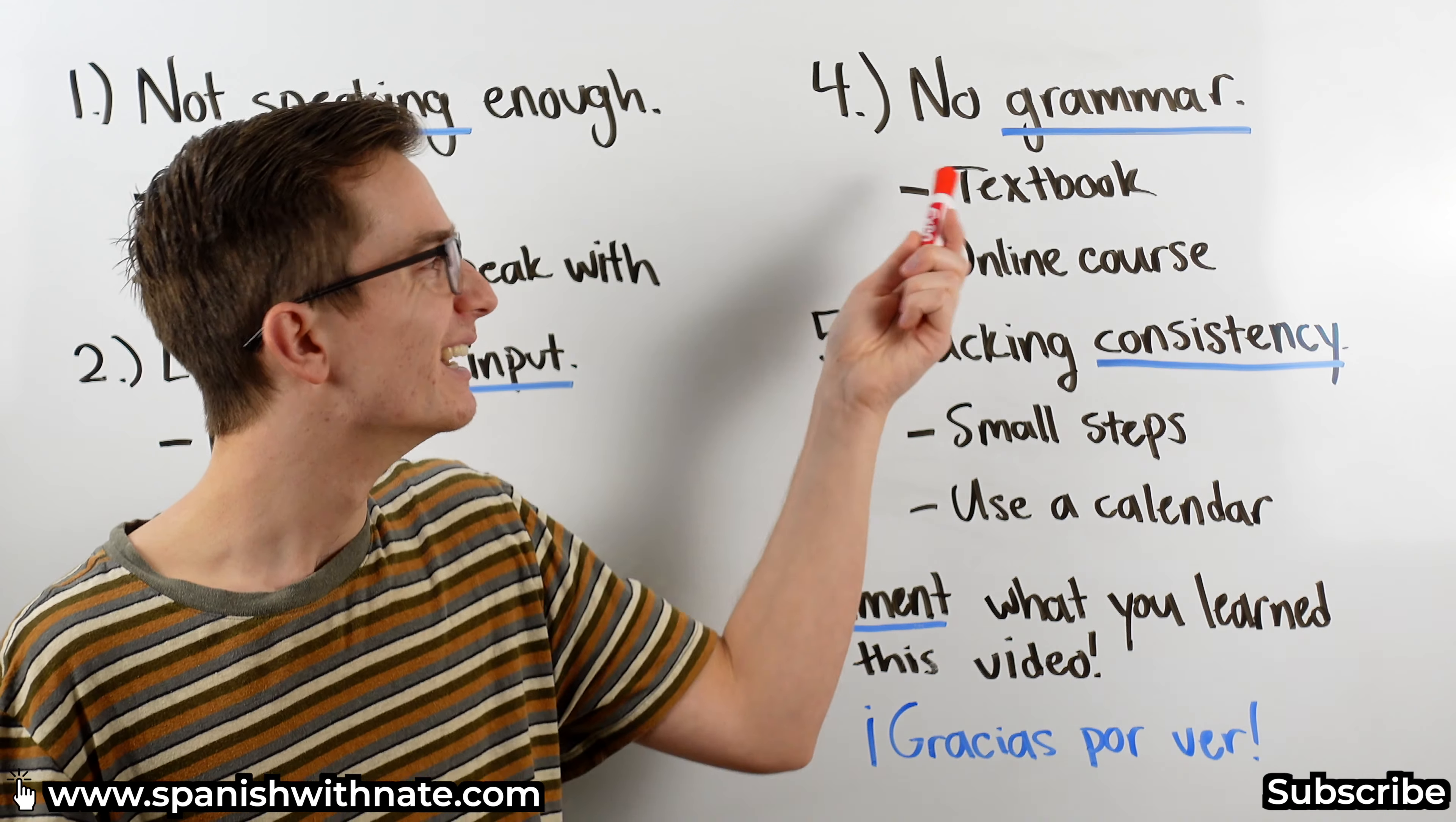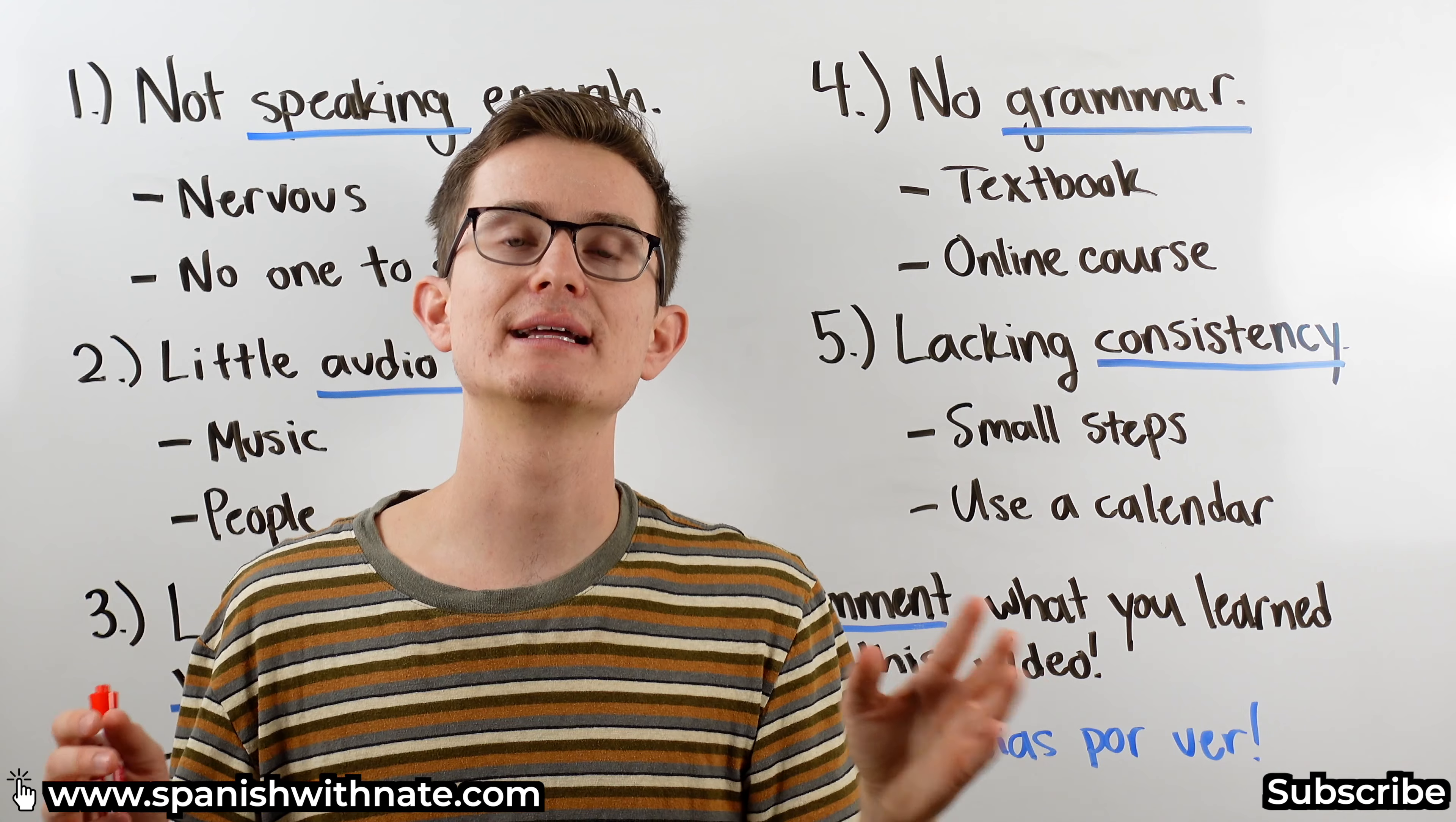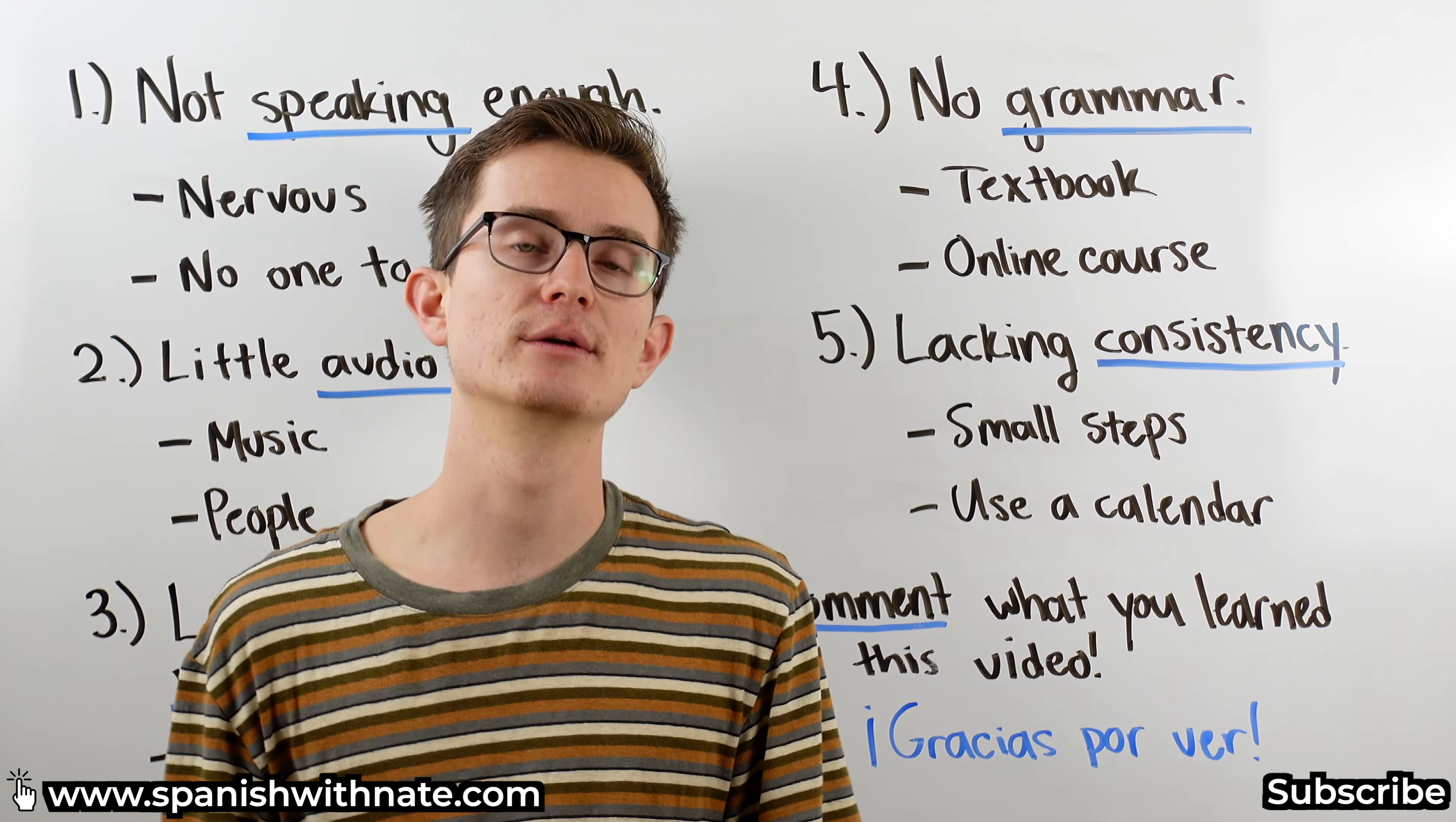All right, moving on to this side of the whiteboard. Number four, no grammar. This is something that a lot of new Spanish learners struggle with, especially when they're learning Spanish on their own. If you've been going through Duolingo's curriculum but you're not sure how to formulate things or how to put things together, it's probably because you have no grammar. Grammar isn't the most fun, it's not the most sexy, but it is extremely important. You need to be understanding the fundamentals of the language if you want to be able to use it effectively, especially once you start getting into the more advanced concepts of the language. So how can we get grammar? Through a textbook or an online course. I'd say those are your best bets.